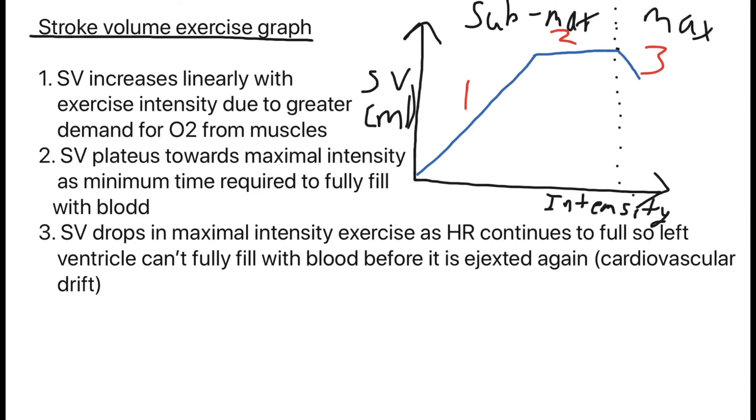Moving on, we're going to look at the stroke volume and exercise graph. Stroke volume, we know what that is, the volume of blood ejected from the left ventricle per beat and it is in milliliters. If you look at this graph, you have stroke volume on the y-axis and intensity on the x-axis. Number one, stroke volume increases linearly with exercise intensity, which is obvious because of the increase in demand of oxygen from the muscle.